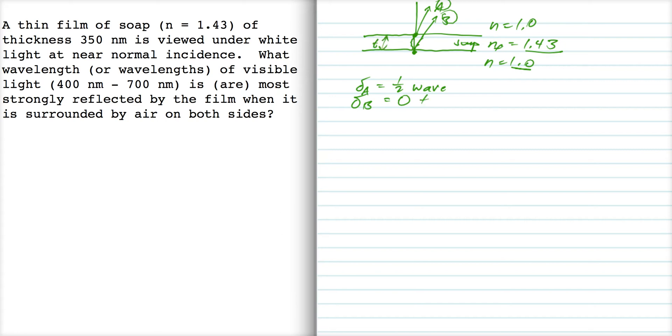So that, the number of waves in the film is two t over the wavelength in the film, which is two t over the base wavelength. Okay, so there's our phase shift for B, that many waves and this is our phase shift for A.